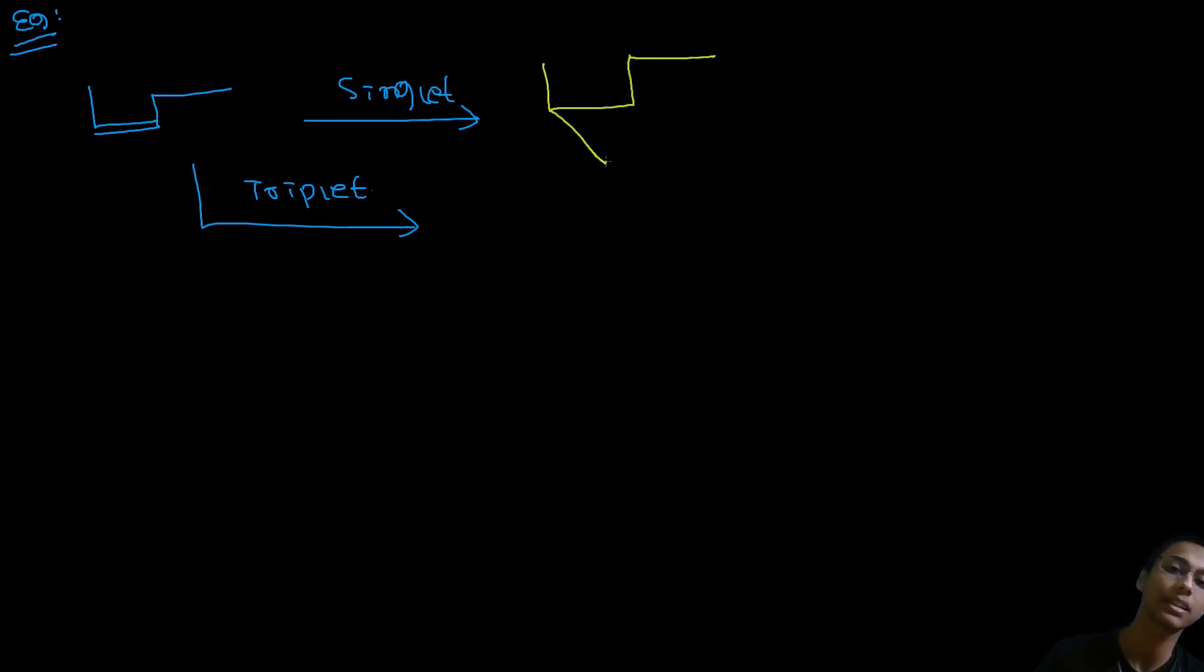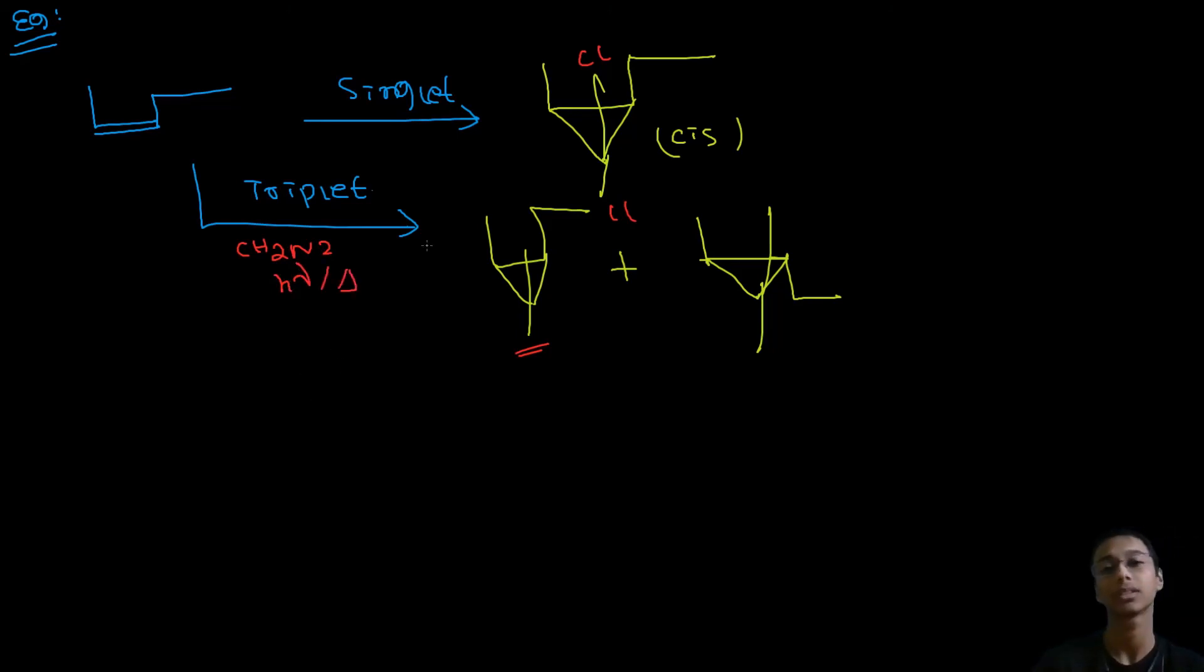If we do singlet, only cis would be formed. And if we do triplet, both cis and trans would be formed. Of course this would be ClCl here, and here they won't be Cl because we used CH2N2, so there is no opportunity of Cl coming there. So that was it guys, that was the video.